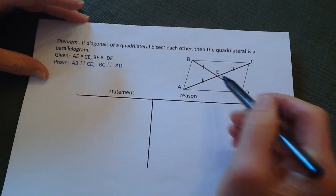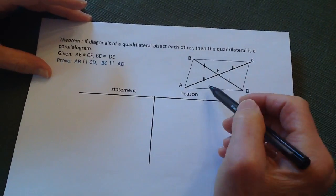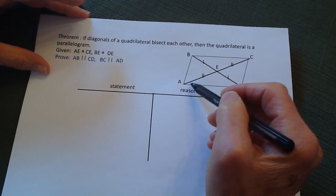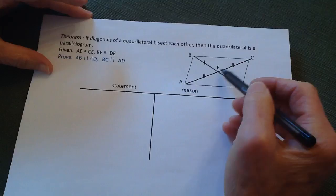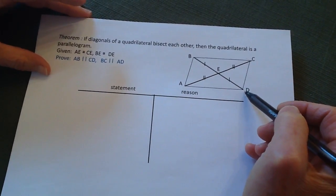We were already given that the diagonals, this part and this part, are equal to each other, as indicated here and here. That's given to us.